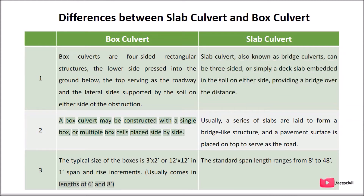Difference 2 — Construction: A box culvert may be constructed with a single box or multiple box cells placed side by side. Usually, a series of slabs are laid to form a bridge-like structure, and a pavement surface is placed on top to serve as the road.